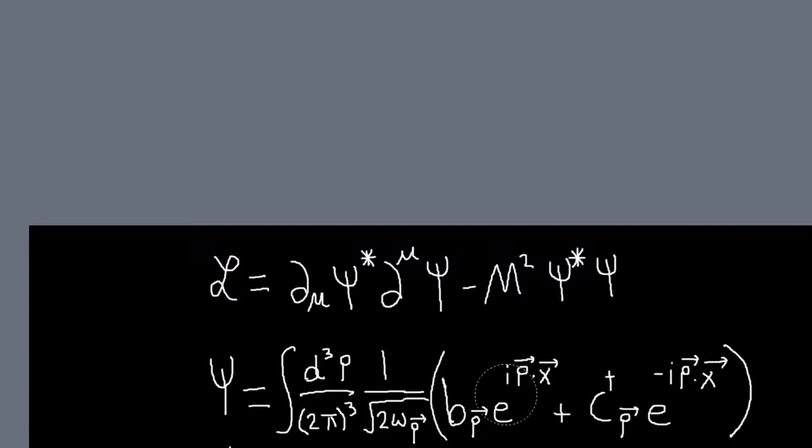And so already, what that's telling us is that there are two kinds of particles that we can create when we quantize this field. So we'll see that later.